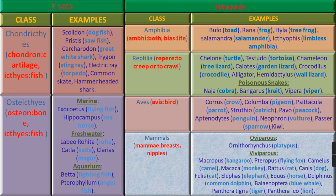Class Reptilia — where Repere means to Creep or to Crawl. Examples are Chelone (Turtle), Testudo (Tortoise), Chameleon (Tree Lizard), Calotes (Garden Lizard), Crocodilus (Crocodile), Alligator, and Hemidactylus (Wall Lizard). Some examples of poisonous snakes are Naja (Cobra), Bungarus (Krait), and Vipera (Viper).